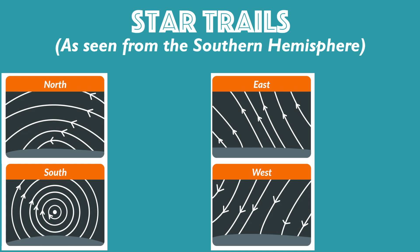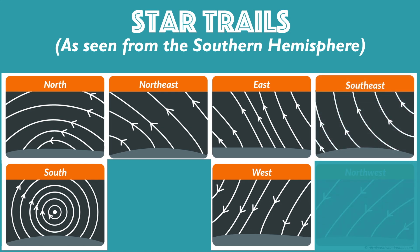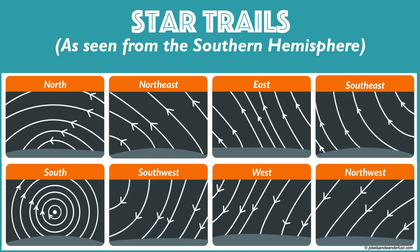And as for the in-between directions of northeast, southeast, northwest, and southwest, the star trails appear to blend the motions of the circumpolar stars and those that are rising directly due east or setting directly due west — almost like the missing puzzle pieces to complete the picture.